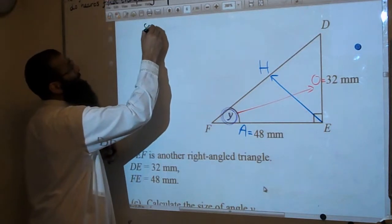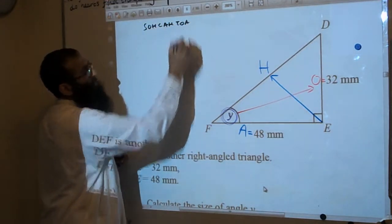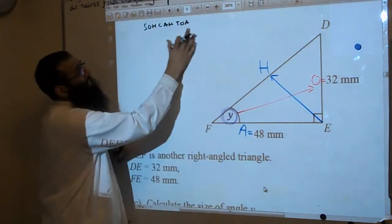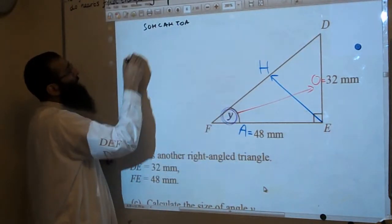So when we, for example, looking at SOH CAH TOA. Because we've got an O and A, that's the last identity. And I'm going to write it in the triangular format.